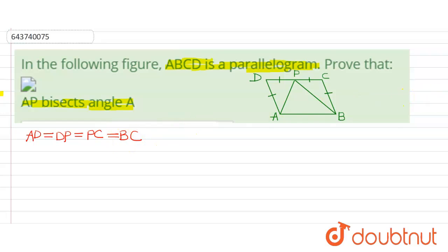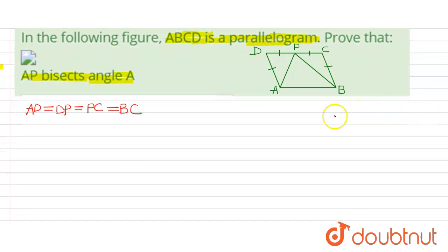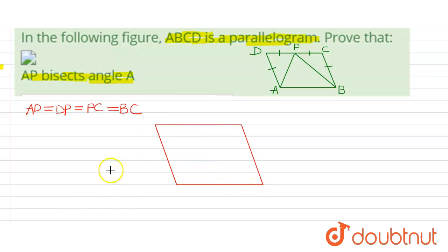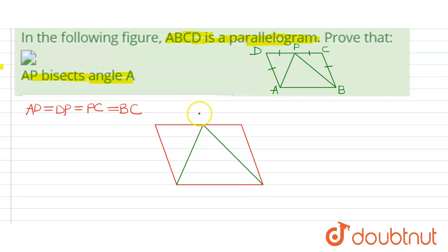Now let's draw a figure of the parallelogram. Let's draw lines AP and BP. This is point B, this is point A, this is D, and this is C. These sides are equal to each other.